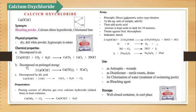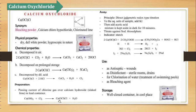On decomposition, hamare paas Ca(ClO₃)₂ plus CaCl₂. Jab hum acid daate hain ismein to hamare paas calcium chloride plus water plus chlorine nikal jayega. Preparation: calcium hydroxide mein chlorine daate hain to calcium oxychloride plus water aa jaata hai.